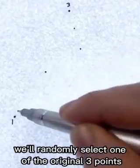Now, we'll repeat once again. After each new point, we'll randomly select one of the original three points, move halfway toward it, and draw another point.